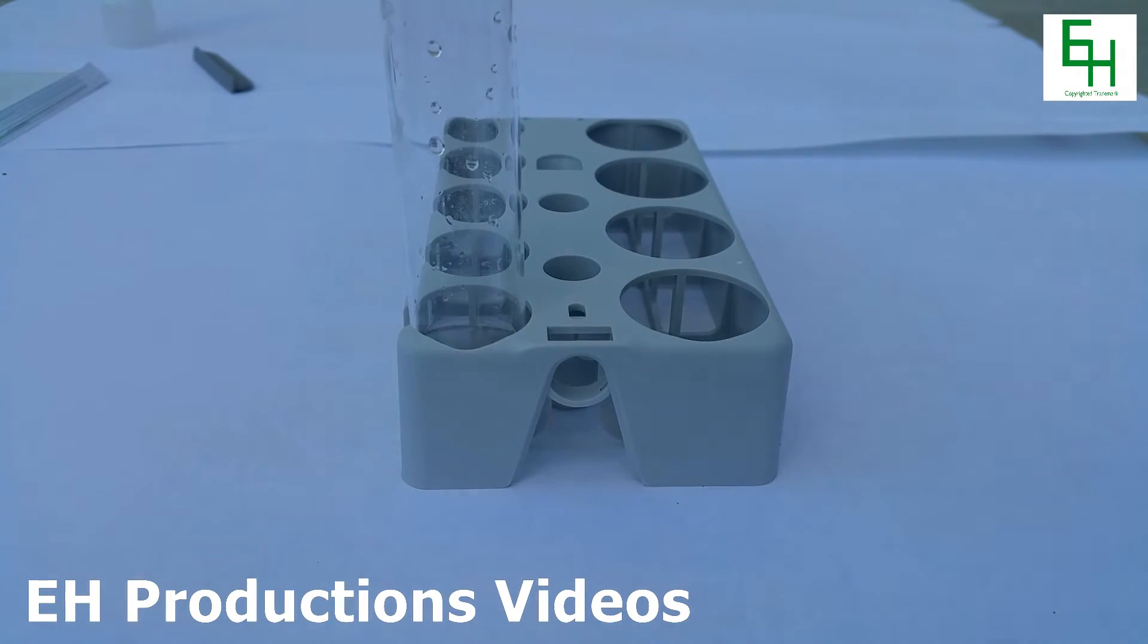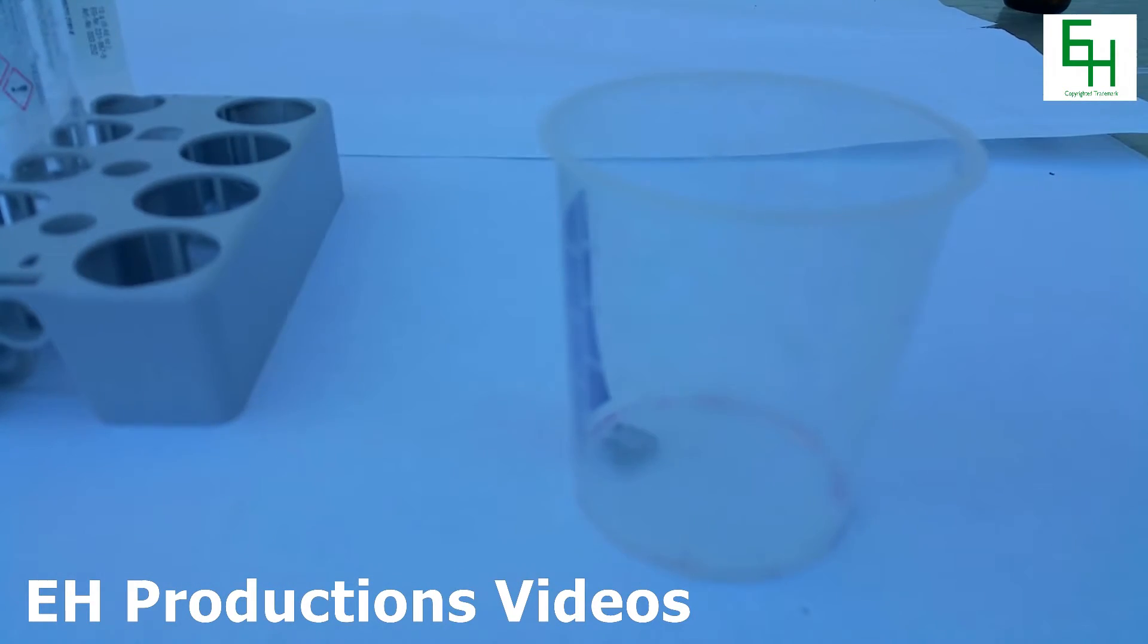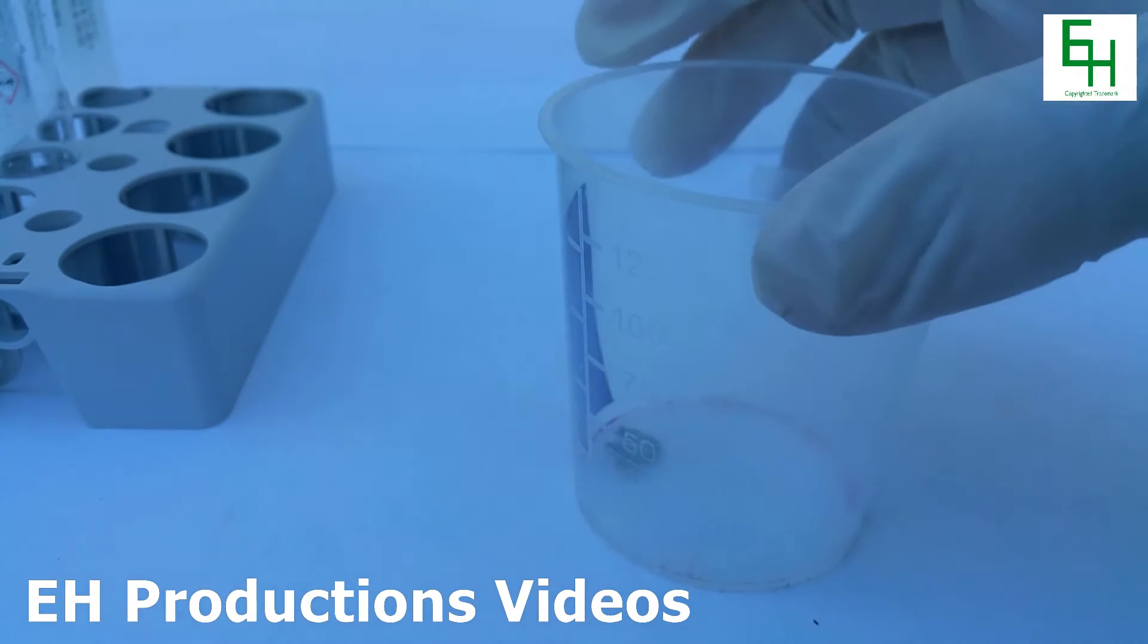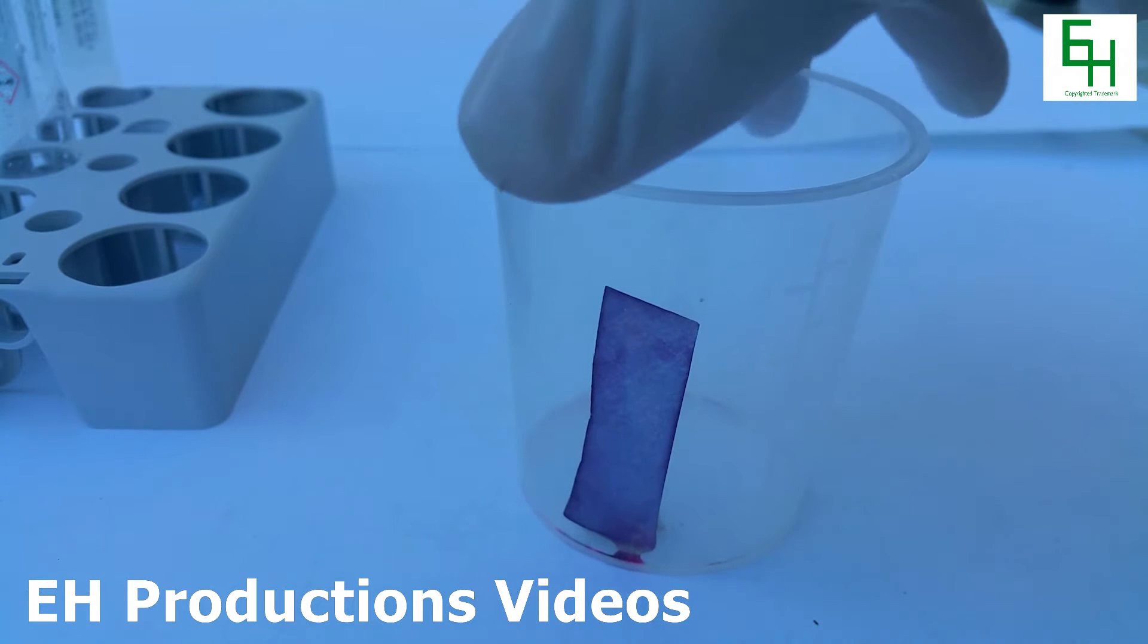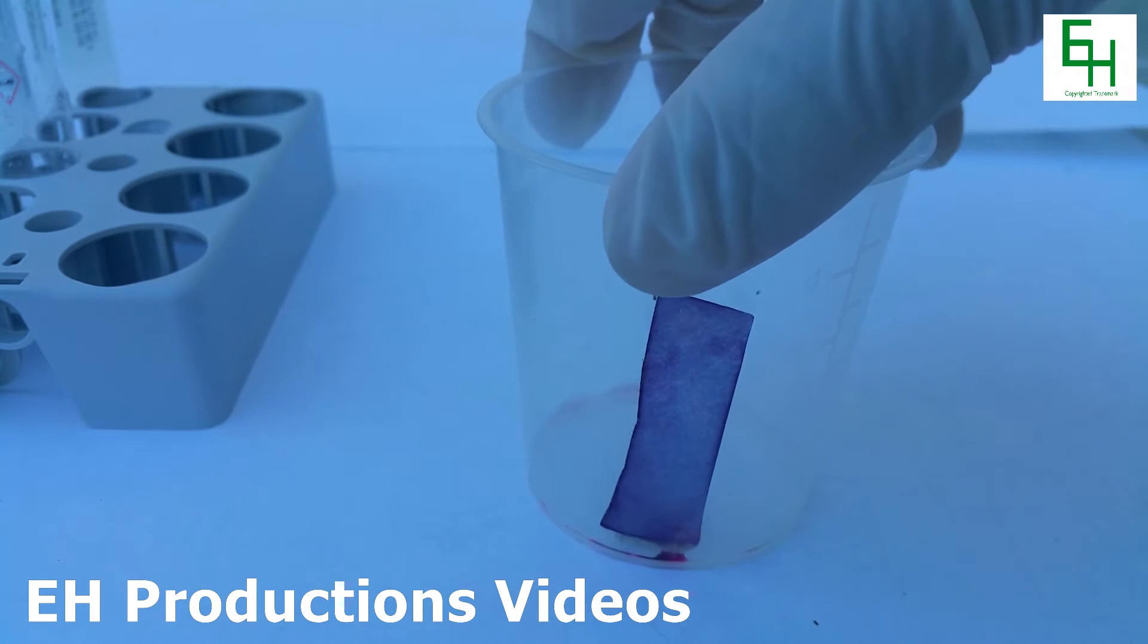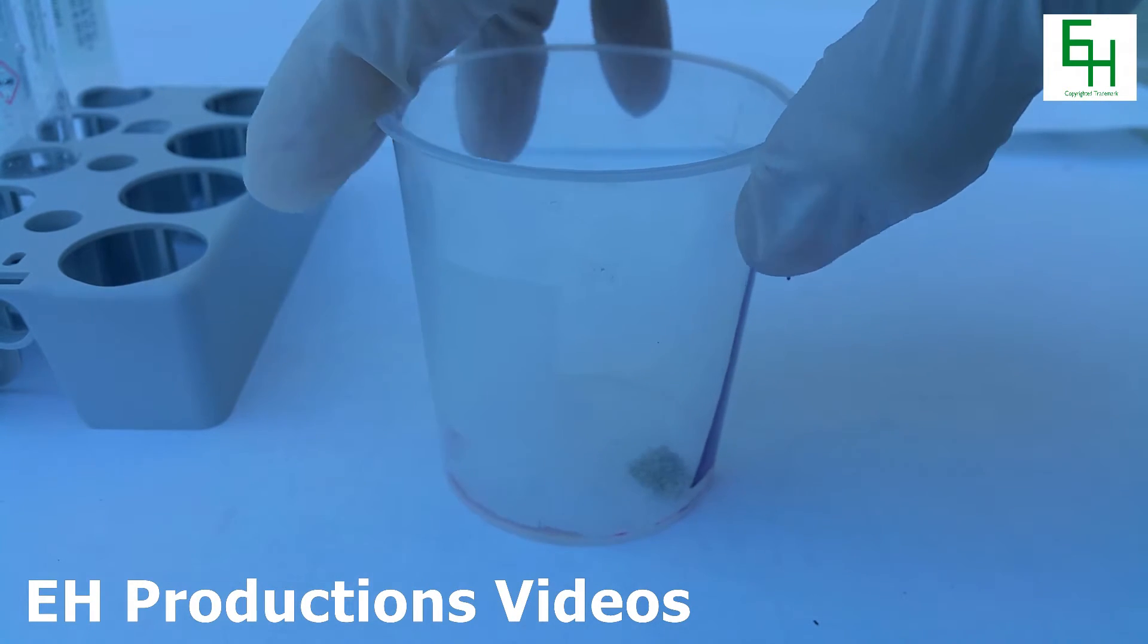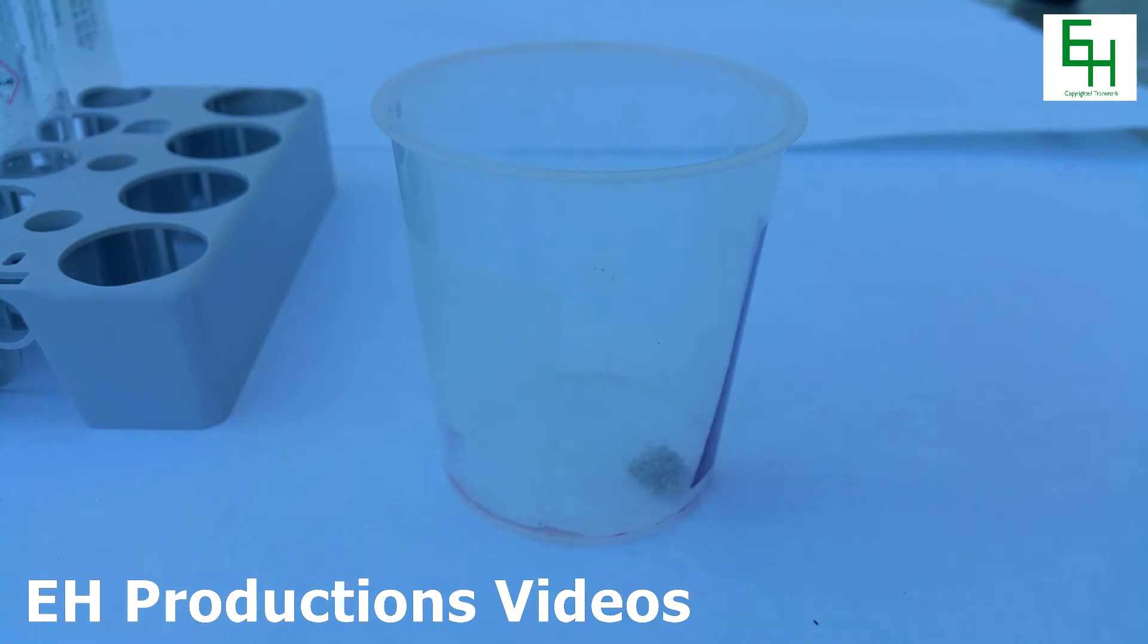Our sodium thiosulfate solution is now ready for use. To show you the bleaching property of chlorine, in this beaker I have a strip of wet litmus paper that I stuck to the side of the plastic beaker and down there is some potassium permanganate.